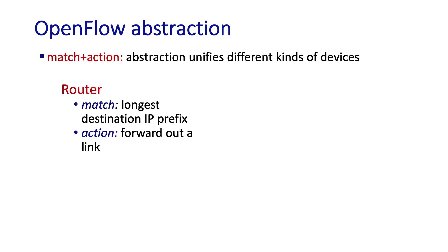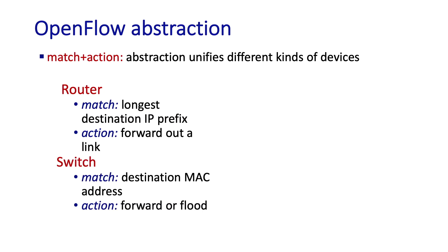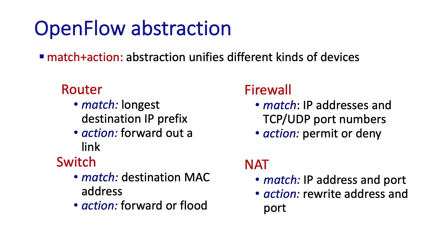So we've seen through these examples that the match plus action abstraction can be used to accomplish the functionality of a number of different kinds of devices. Match plus action accomplishes network layer destination based forwarding, link layer switching, firewalling, and with the ability to rewrite headers, NAT-like types of services as well.